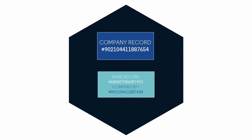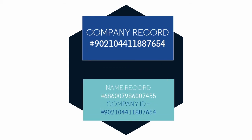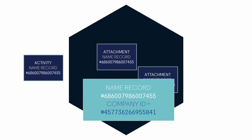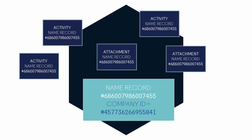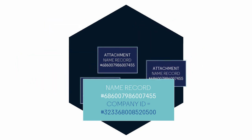The critical advantage here is that the name can be moved from one company to another by simply changing that company identifier, allowing a candidate to become a client or a vendor to become an employee without duplicating or recreating their contact record. All of that person's activity logs and attachments, which, incidentally, are kept in their own separate tables, stay linked to that name no matter what jobs or company that name is associated with.